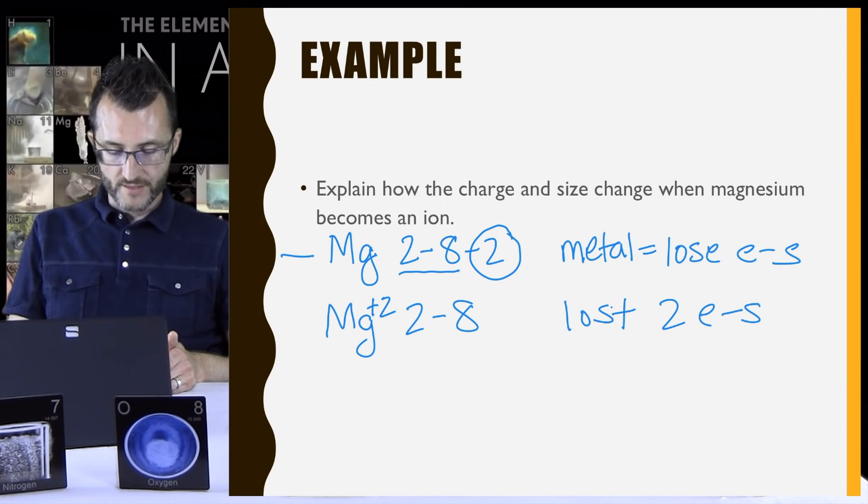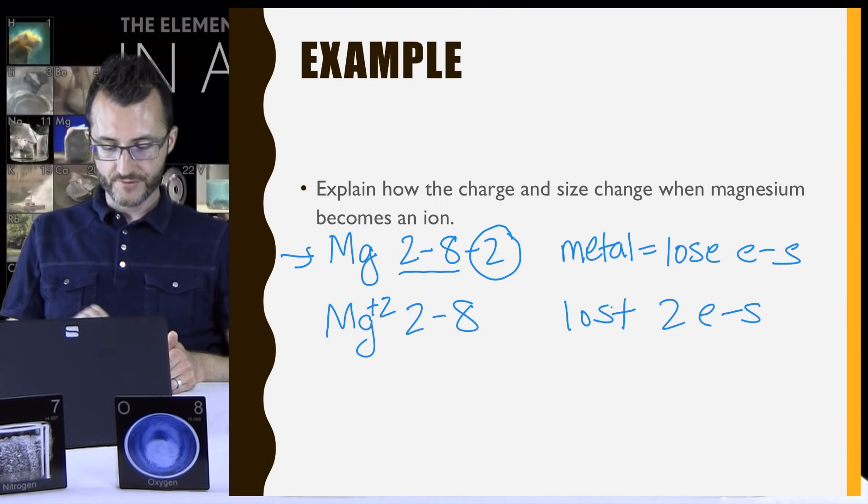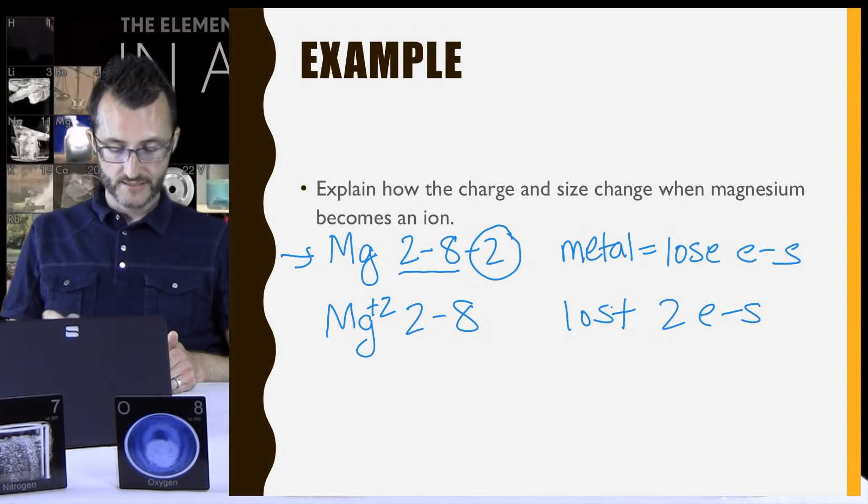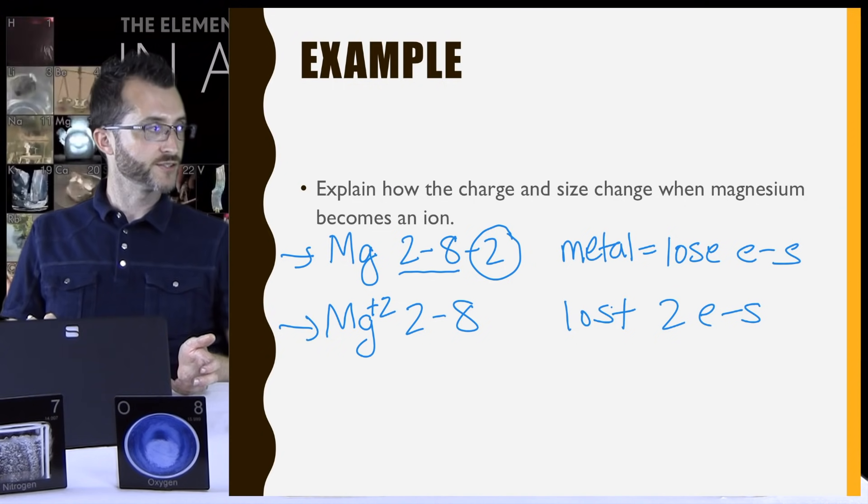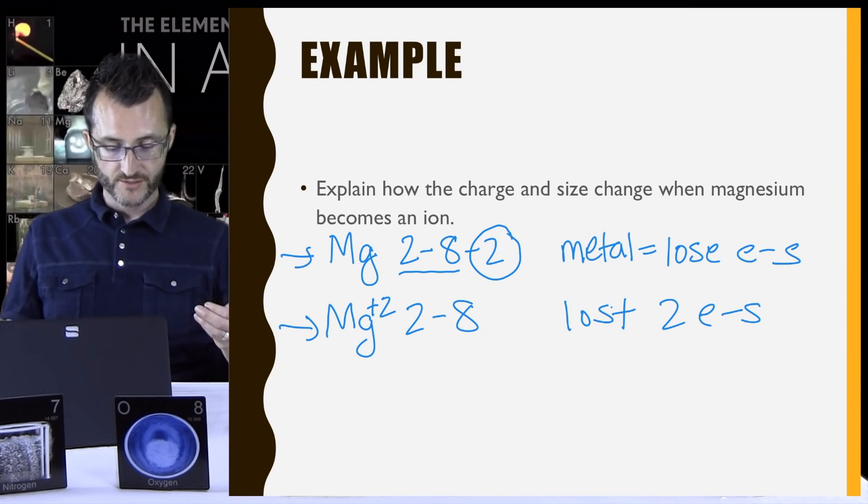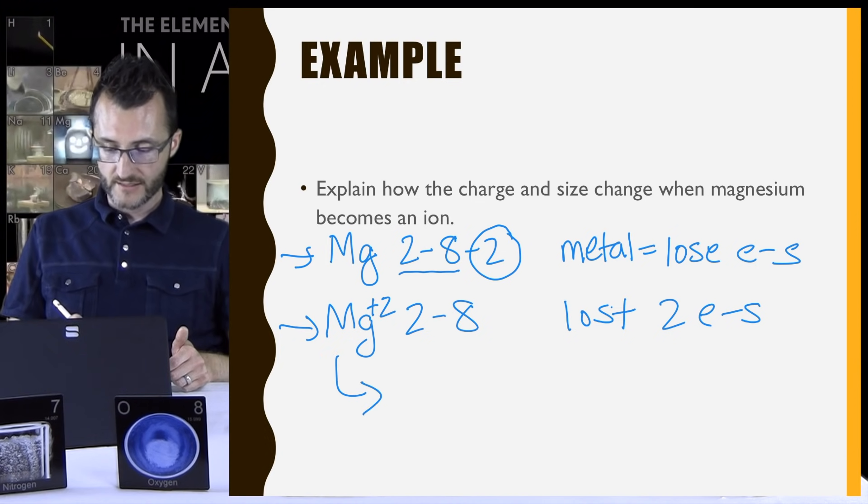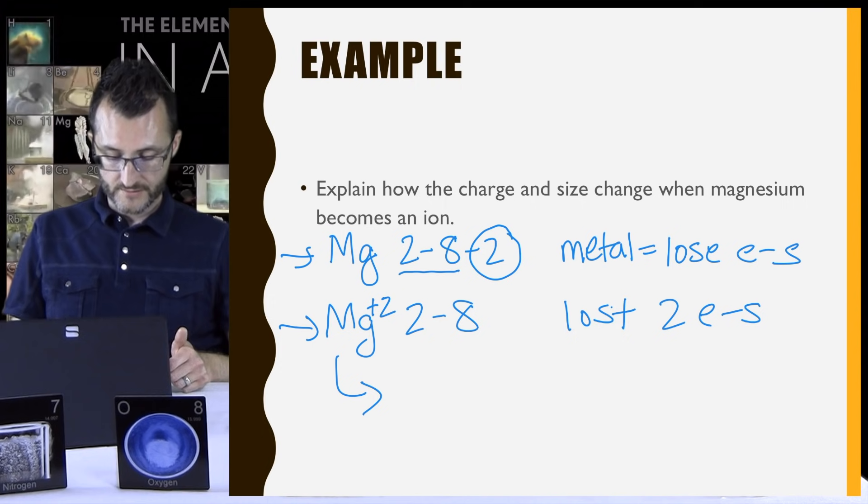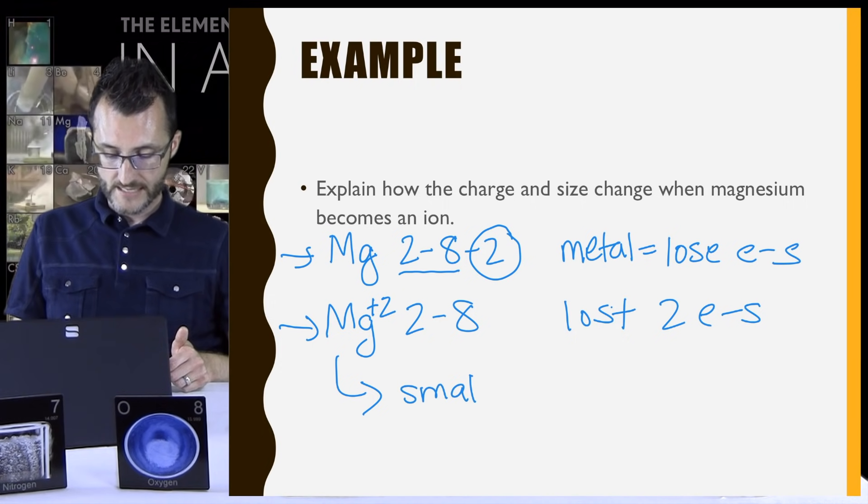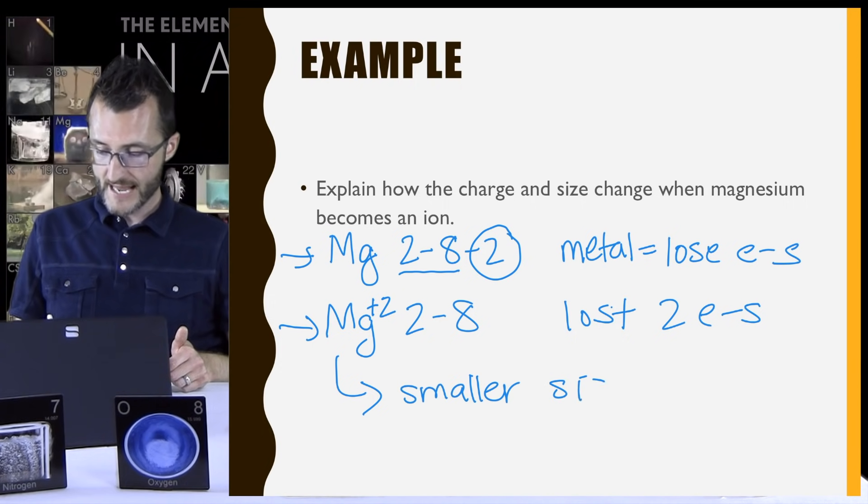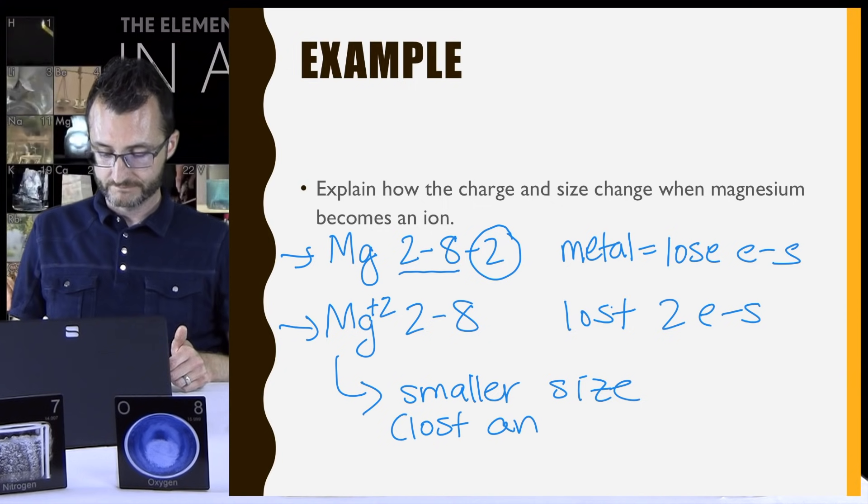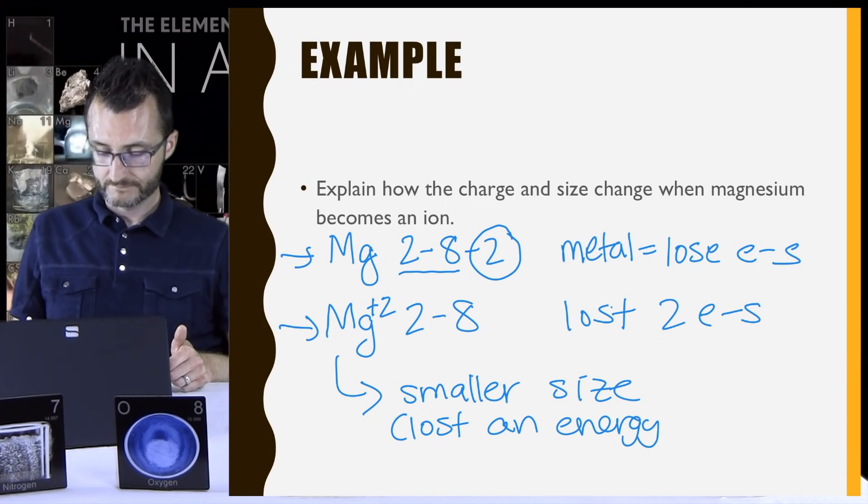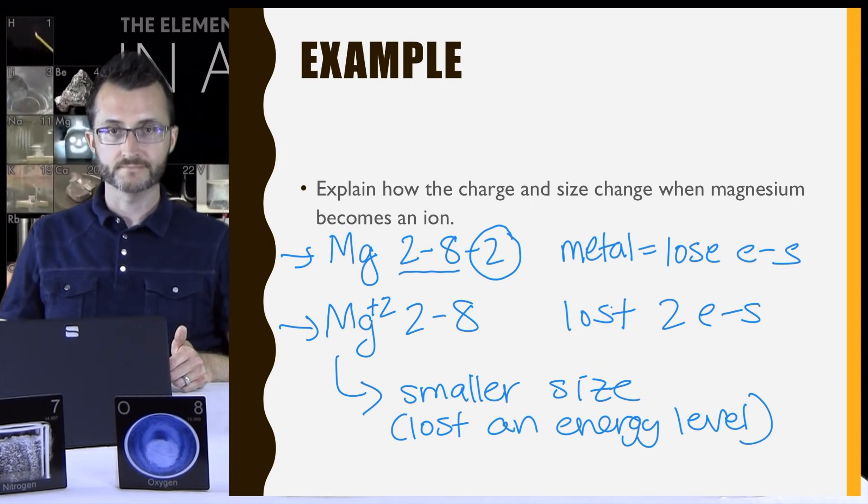So one last step here. Let's compare the size before and after losing those electrons. All right. So for the first one, it looks like I have 1, 2, 3 energy levels, right? And then after losing, now I only have 2 energy levels. I went down an energy level, so this ion should have a smaller size, right? Yeah. It's pretty obvious with the metals there, right? Yes. So smaller size, loss in energy level. Good job.